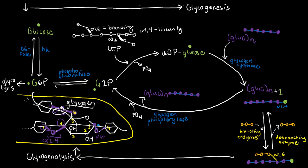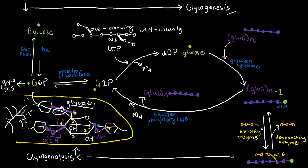Glycogen is truly just so many molecules of glucose — some in a linear fashion, but some branching out from another branch from another branch. We can say glycogen is a highly branched polysaccharide of glucose. With that said, all you need to do to make glycogen is to form alpha-1,4 and alpha-1,6 bonds, and to break it down completely, you break all those bonds. We will be discussing both glycogenesis — the synthesis of glycogen — and glycogenolysis — the breakdown of glycogen.